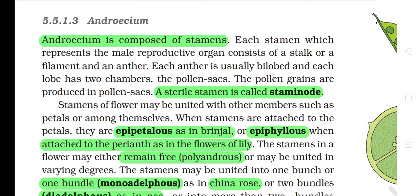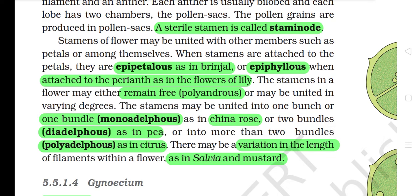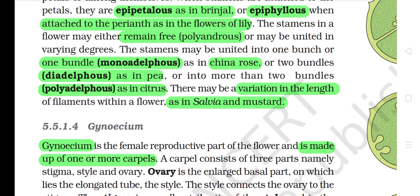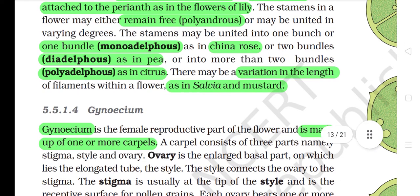5.5.1.3 Androecium. Androecium is composed of stamens. Each stamen, which represents the male reproductive organ, consists of a stalk or filament and an anther. Each anther is usually bilobed and each lobe has two chambers — the pollen sacs. The pollen grains are produced in pollen sacs. A sterile stamen is called a staminode. Stamens of a flower may be united with other members such as petals or among themselves. When stamens are attached to the petals, they are epipetalous as in brinjal, or epiphyllous when attached to the perianth as in lily. The stamens may remain free (polyandrous) or may be united into one bundle (monadelphous) as in china rose, or two bundles (diadelphous) as in pea, or into more than two bundles (polyadelphous) as in citrus. There may be variation in the length of filaments within a flower, as in salvia and mustard.